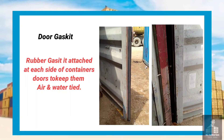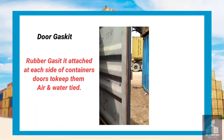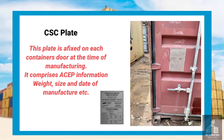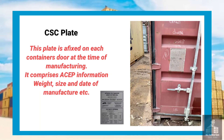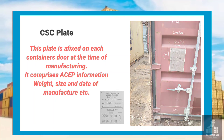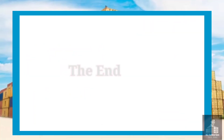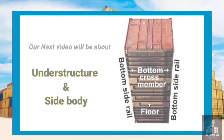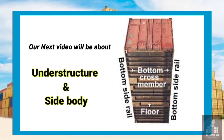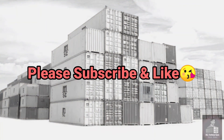CSC plate: this plate is affixed on each container's door at the time of manufacturing. It comprises CEP information, weight, size, date of manufacture, and other details. My next topic will be understructure and side body. If you like my video, please subscribe.